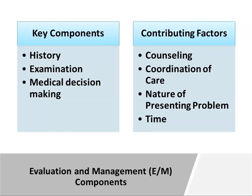So let's begin. Whenever we talk about Evaluation and Management Services, you're going to hear the term components — key components. According to the CPT manual, there are actually seven components to a potential CPT code. Three of the seven components are known as history, exam, and medical decision making, and those three key components will be the focus of our session today. However, when it applies, a provider can also use the other four components, which are known as contributing factors, when they contribute to the evaluation and management service being performed.